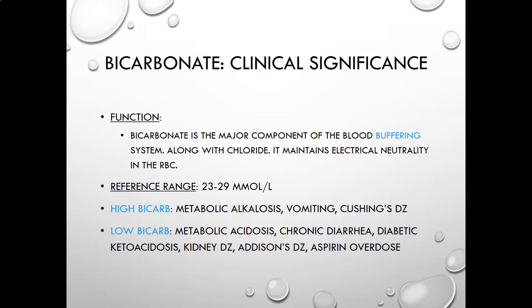The function of bicarbonate is that it is the major component of the blood buffering system to maintain pH. Along with chloride, it also maintains electrical neutrality in the red cell — there is a deeper explanation in the video on sodium, chloride, and potassium. The reference range for bicarbonate is 23 to 29 millimoles per liter. High bicarbonate levels are associated with metabolic alkalosis, vomiting, and Cushing's disease. Low bicarbonate levels are associated with metabolic acidosis, chronic diarrhea, diabetic ketoacidosis, kidney disease, Addison's disease, and aspirin overdose.